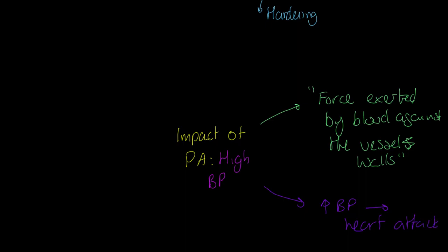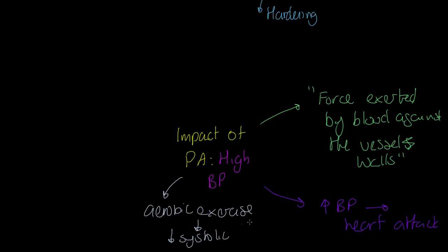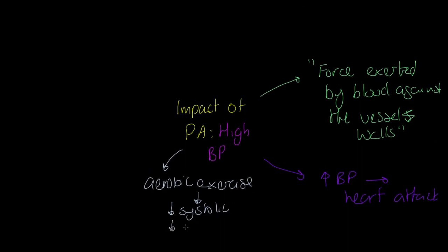The great news is that aerobic exercise — continuous training, going to the gym, walking regularly — has an absolutely positive impact. It reduces systolic blood pressure, that's blood pressure while the heart is in contraction phase, and it also reduces diastolic blood pressure. That reduction can be as much as five to ten millimetres of mercury for each of the systolic and diastolic readings — a massive impact.